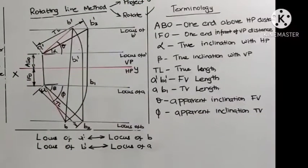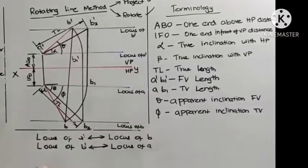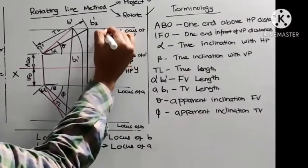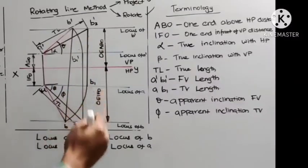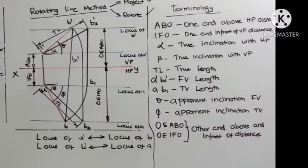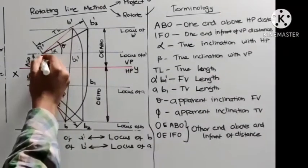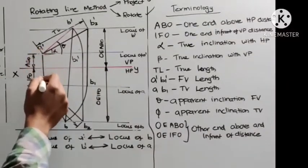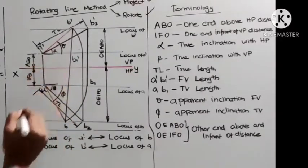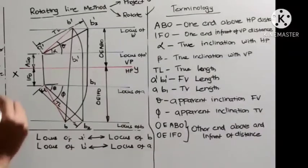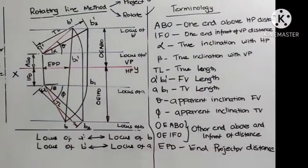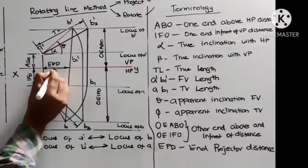Sometimes in a problem, instead of one set of distances, they may also mention the above distance and the in-front-of distance for the other end of the line. One more important term is the end projector distance — that is, the distance between the two end projectors: from A dash to A (one projector) and from B dash to B (the other projector). This distance is called the end projector distance, and it can be measured for all problems.